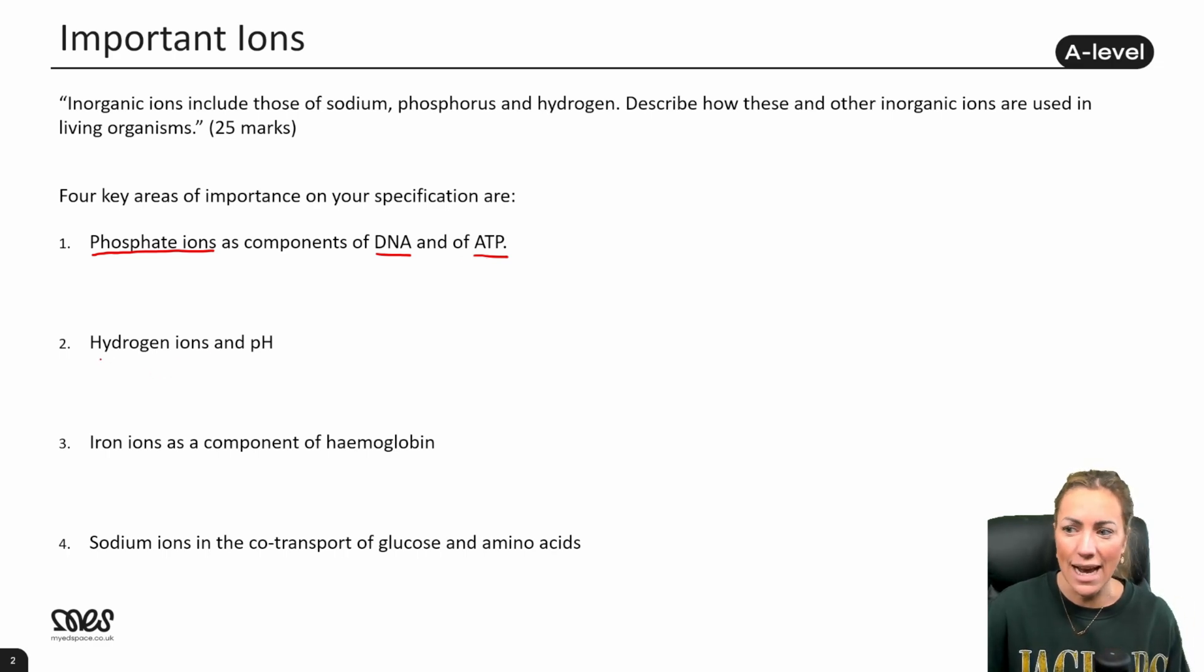Another important ion: hydrogen ions and pH. Now the concentration of hydrogen ions in a solution determines the pH. You could link this to the importance of maintaining pH in cells for enzyme activity, because as we know enzymes are particularly sensitive to any change in pH and could potentially be denatured if the concentration of hydrogen ions was not maintained to give the correct pH.